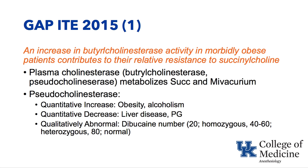Pseudocholinesterase can also be qualitatively abnormal — it's not the amount that's the problem, but how the enzyme works itself. The dibucaine number refers to inhibition of this enzyme by the amide local anesthetic dibucaine, which is normally 80%. In the homozygous qualitatively abnormal pseudocholinesterase, it's inhibited only 20%, giving a dibucaine number of 20. When the dibucaine number is 40 to 60, this is a heterozygous qualitatively abnormal pseudocholinesterase.